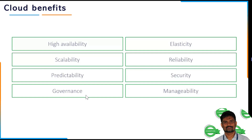Then we have governance — how can we control it? If you have a business, you need governance. Then we have elasticity — basically, we can add or reduce capacity levels as needed.